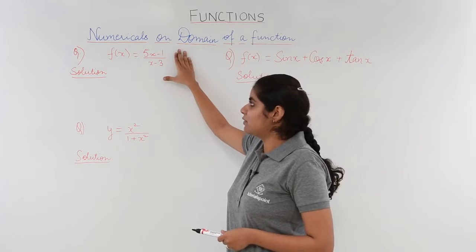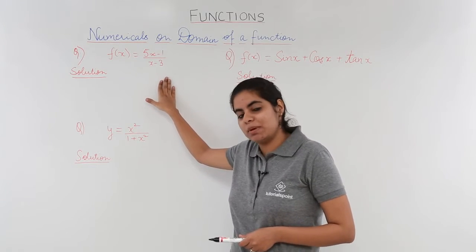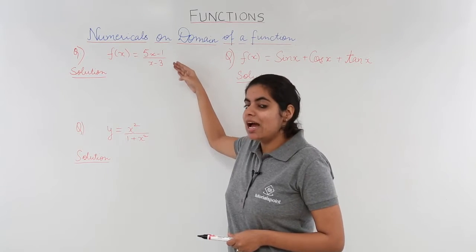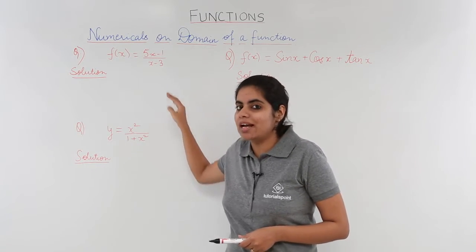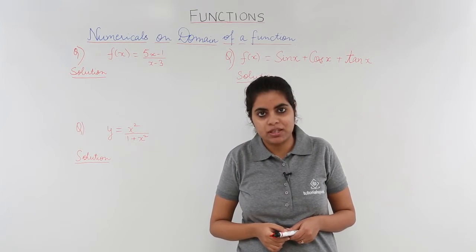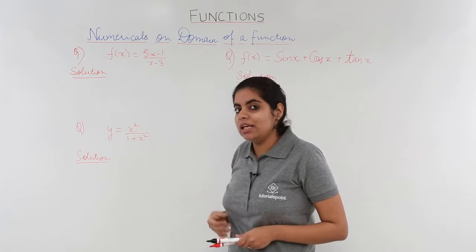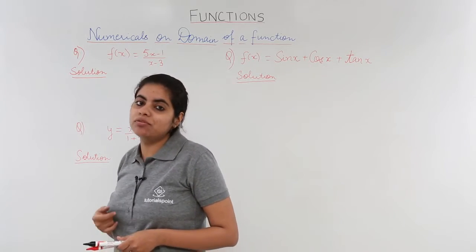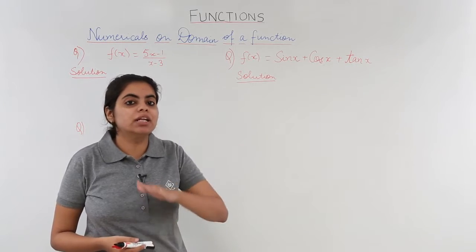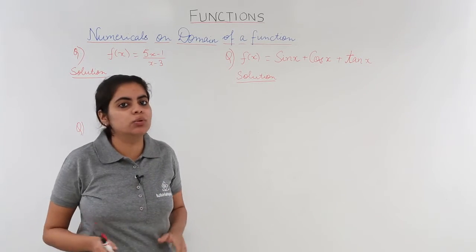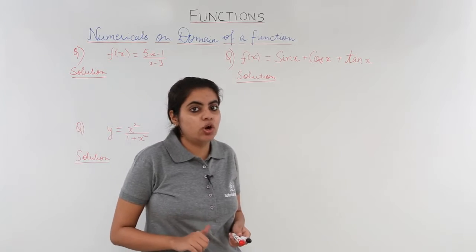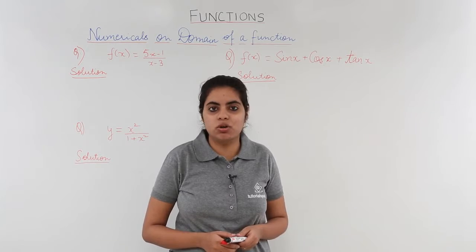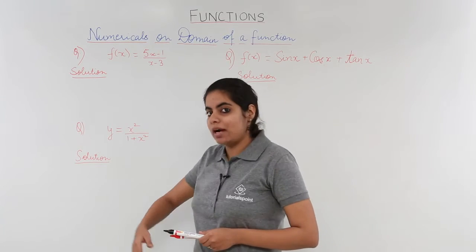The first problem has a function f(x) = (5x - 1) / (x - 3). As you can see, this function has both a numerator and denominator, so it is an example of a rational function. Any rational function only exists when the denominator is not equal to zero — the denominator should always be nonzero. If the denominator becomes zero, the function does not exist.